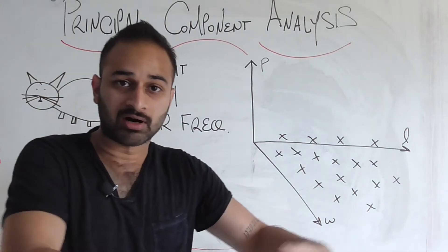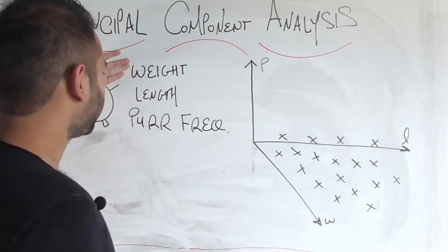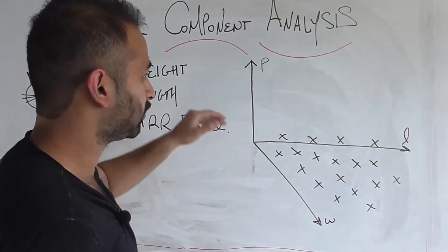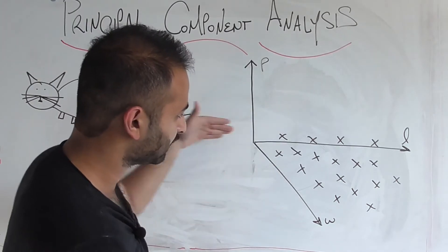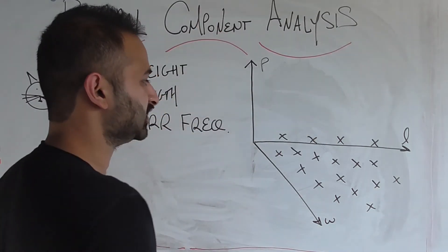Let's say we gather up all of our cats and we measure their length, their weight, and their purr frequency and plot it on this three-dimensional setup right here. So we have weight here, we have length here, and purr frequency as the z-axis.